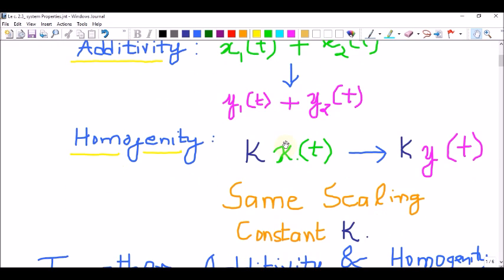The property of homogeneity or scaling says that if the input is scaled by a factor of k, the output is also scaled by the same factor k for a homogeneous system.